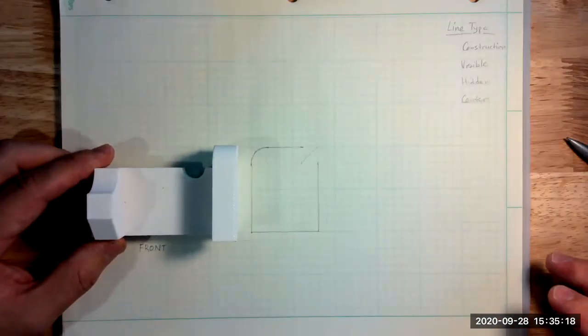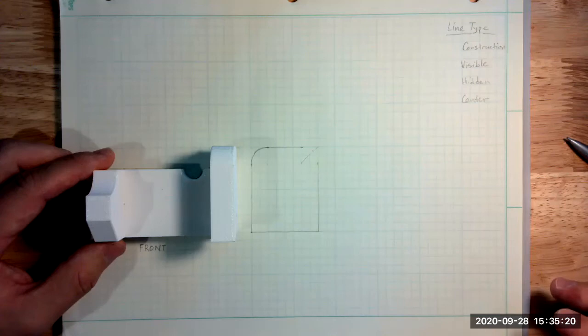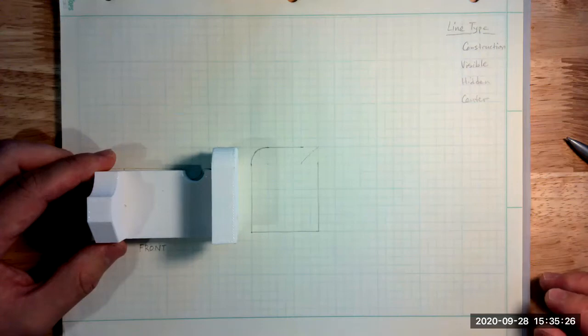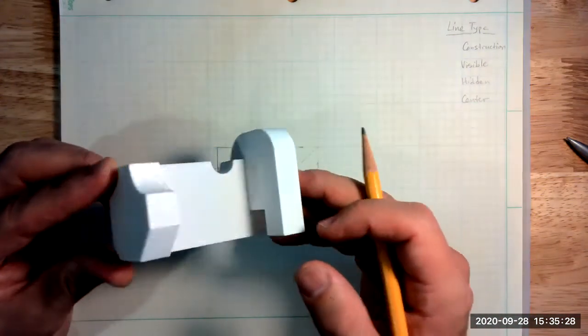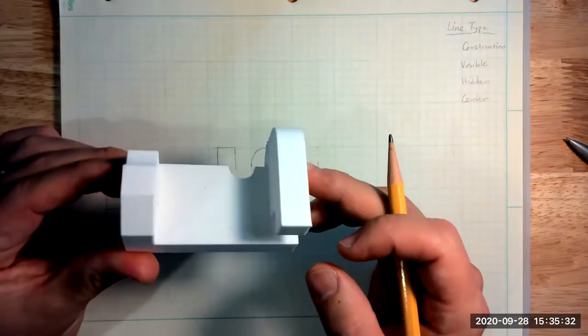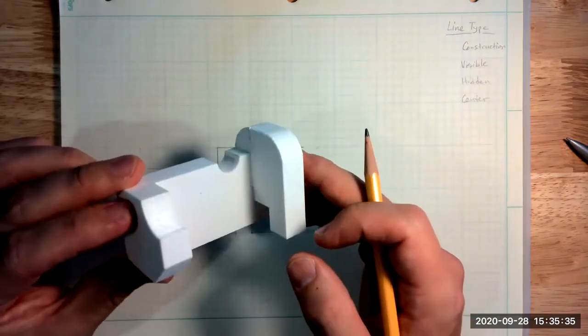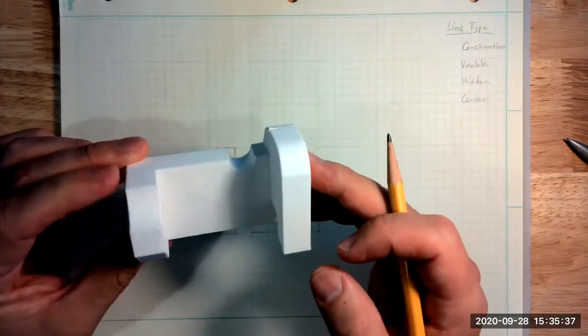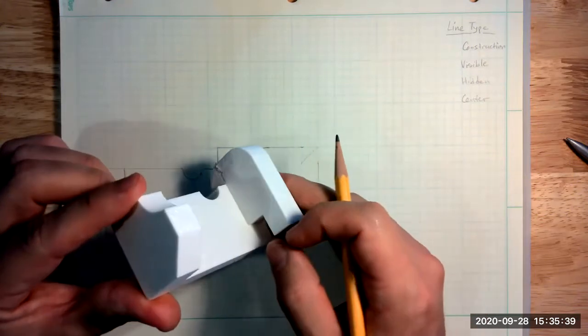Okay class, we're going to continue talking about our orthographic multi-view, which are two-dimensional sketches. I'm using this sort of abstract object as our example here. So this is not an actual thing, it's just a 3D printed object with different features.